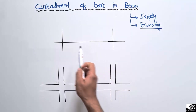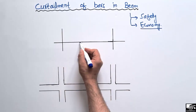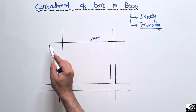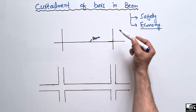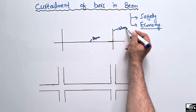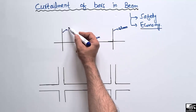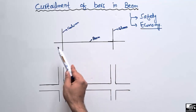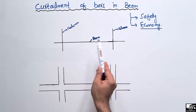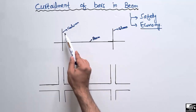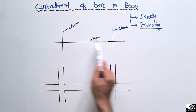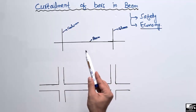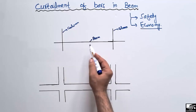Let's consider this beam — this horizontal member shows the beam, and this is a continuous beam passing through the columns. These vertical members are the columns on both sides of the beam. This is the general shape, or the free body diagram, of an RC structure composed of beams and columns.